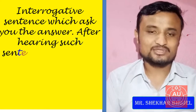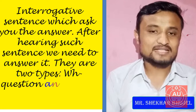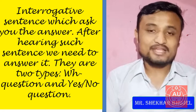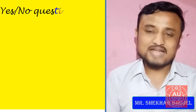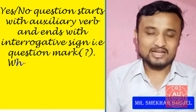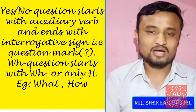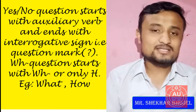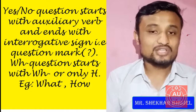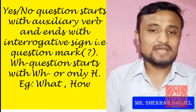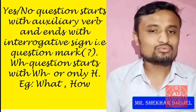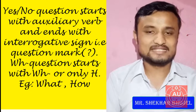Interrogative sentences are also of two types: WH-questions and yes/no questions. Yes/no questions always start with an auxiliary verb and end with a question mark. WH-questions always start with a WH-word, for example: what, how. These are some examples of WH-question words ending with a question mark.